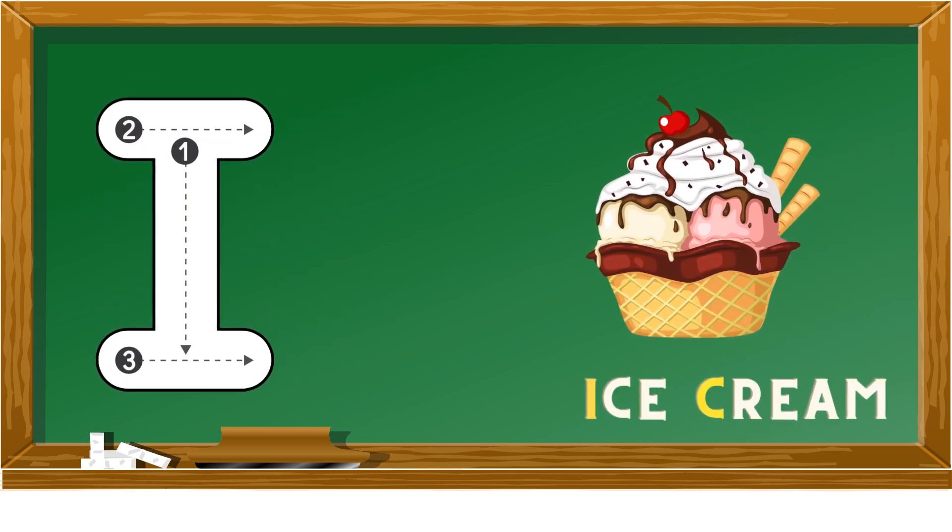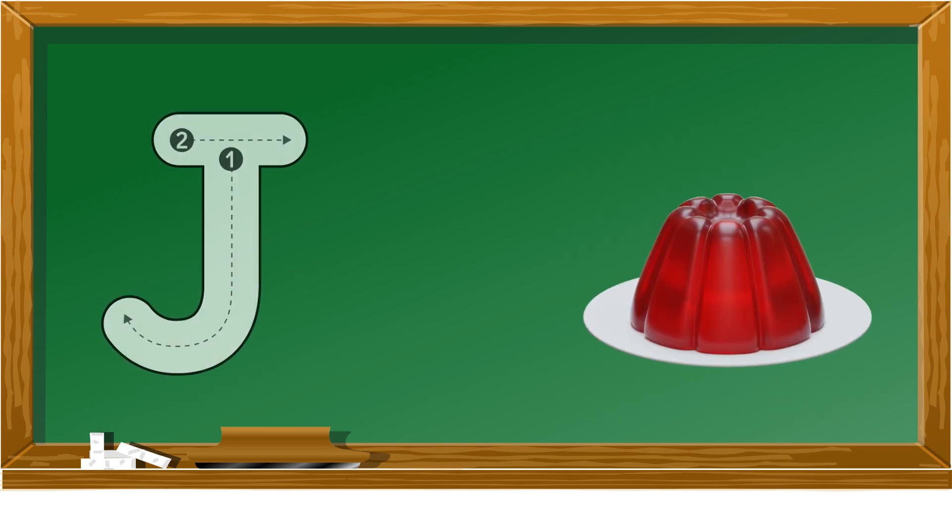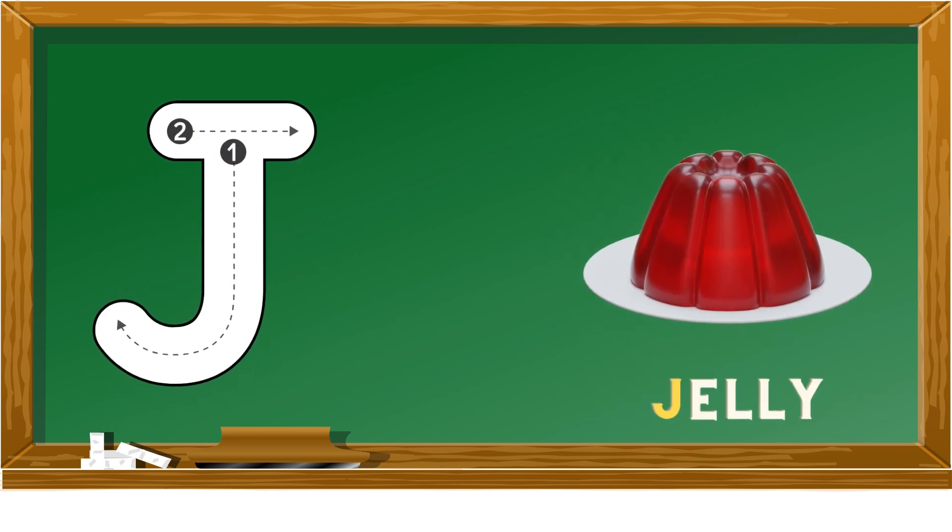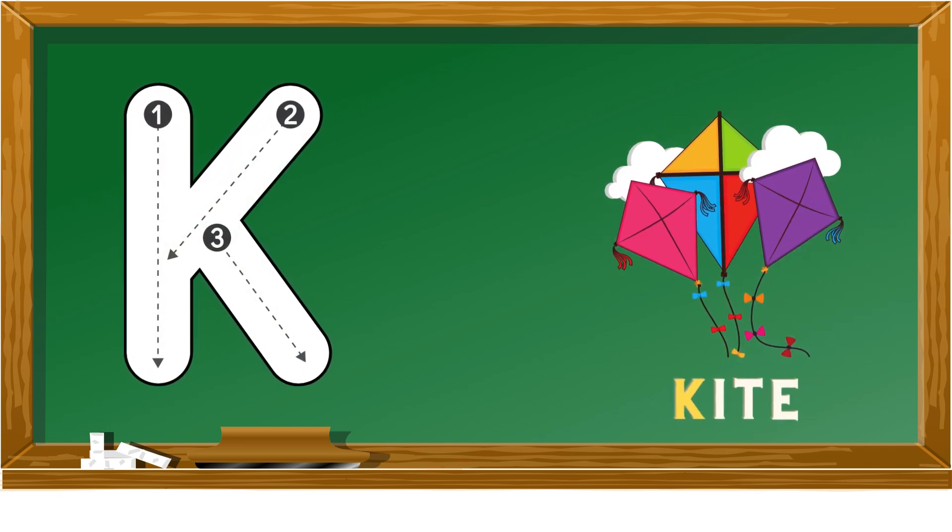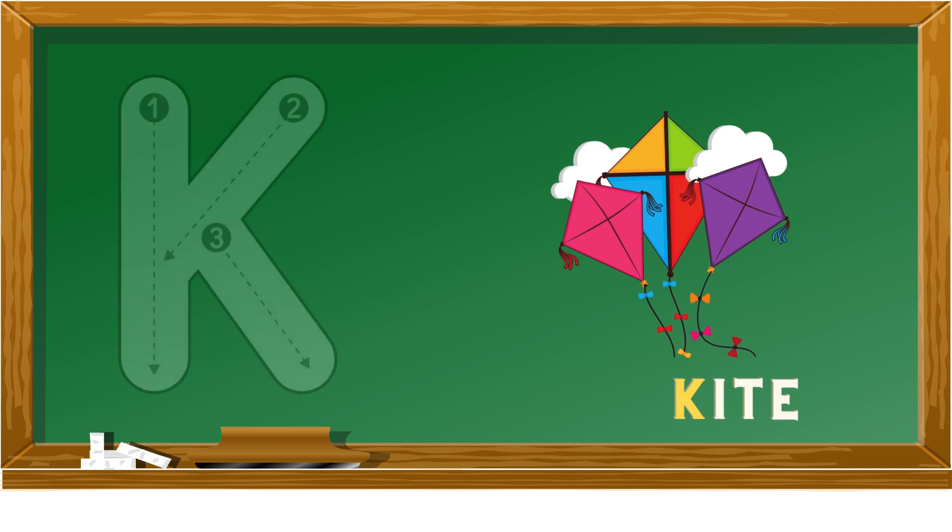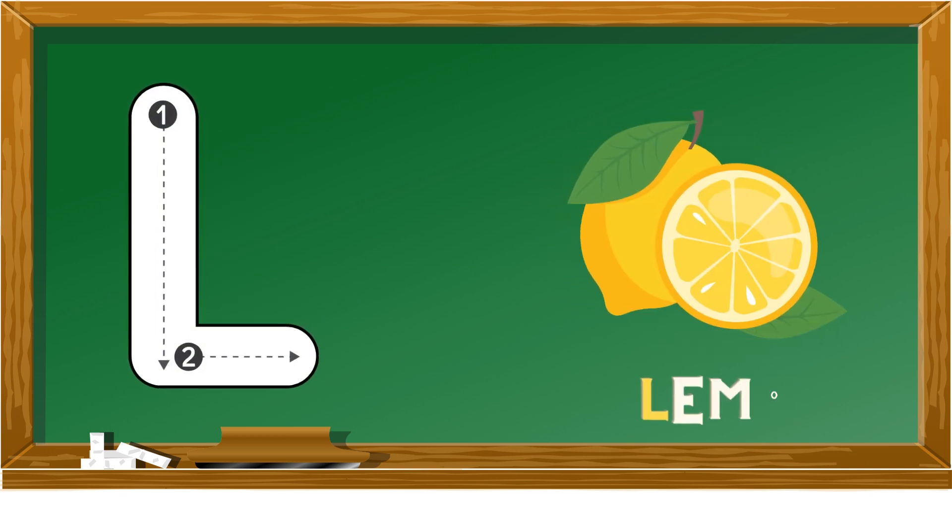J is for jelly, K is for kite, L is for lemon.